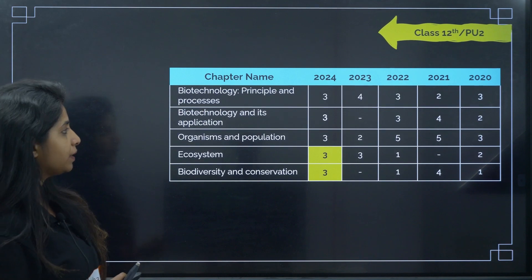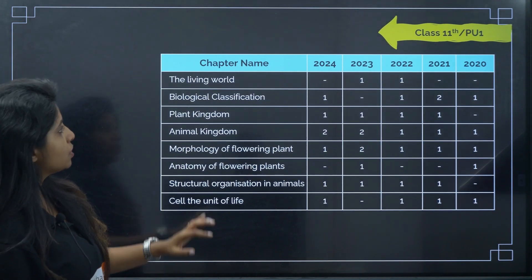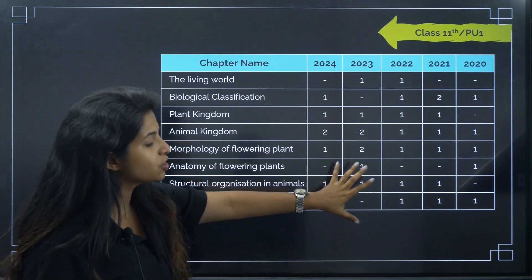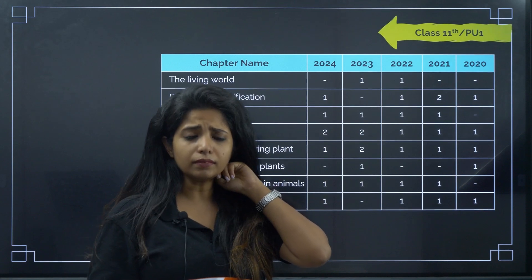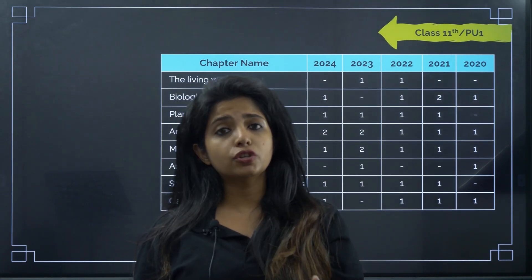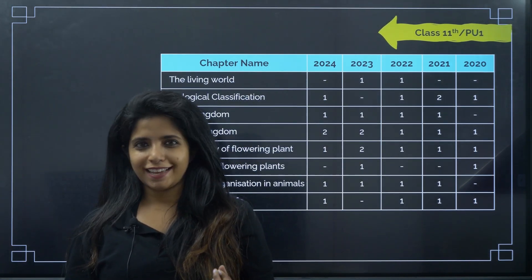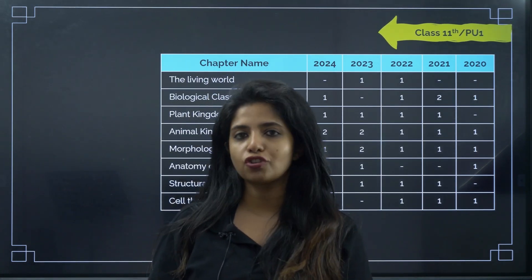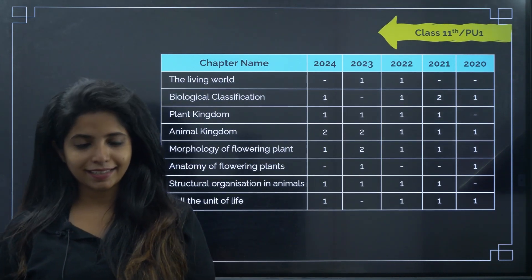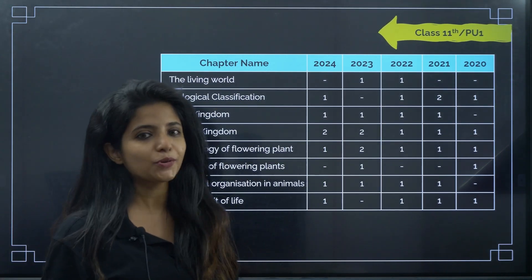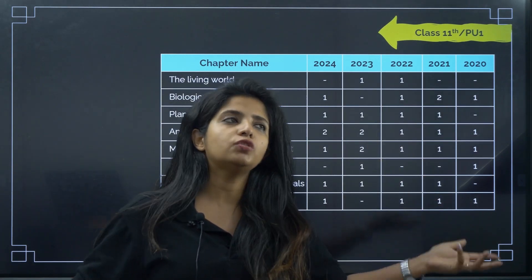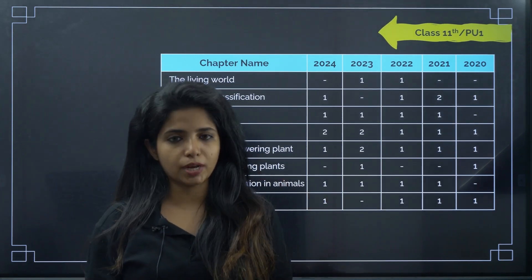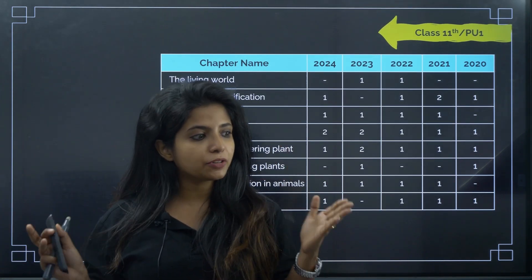For 11th grade weightage, 'The Living World' follows a pattern of none, none, one, one, then none — so trends are changing. If you're a KCET aspirant, questions come majorly from 12th grade and the rest from 11th grade, so your 12th should be really strong to crack KCET. For board students in 12th, 12th is obviously very important.